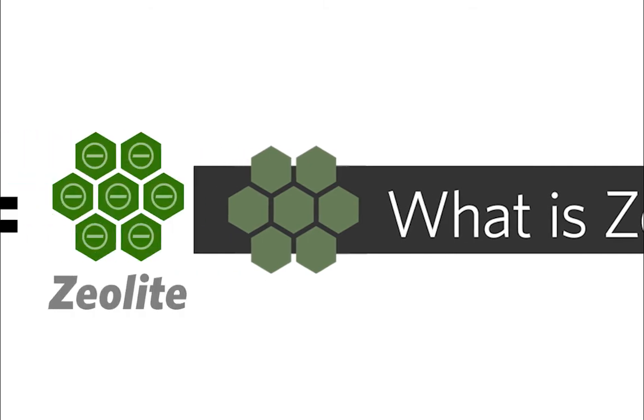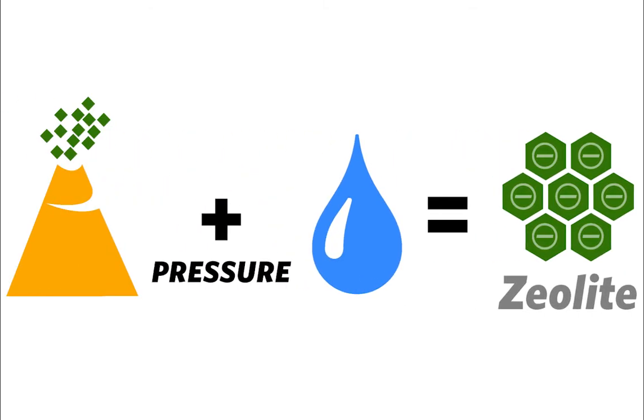What is zeolite? Zeolite is a natural mineral created many years ago by volcanic ash falling into an alkaline water source and being put under pressure.